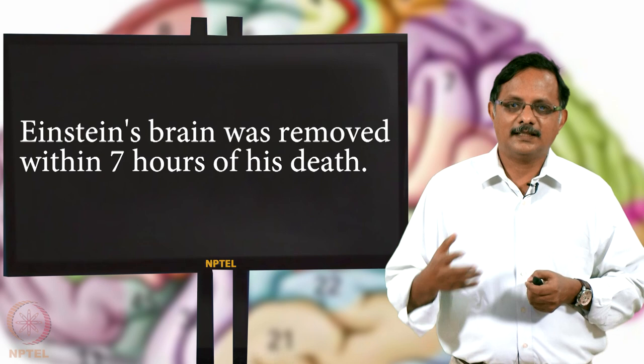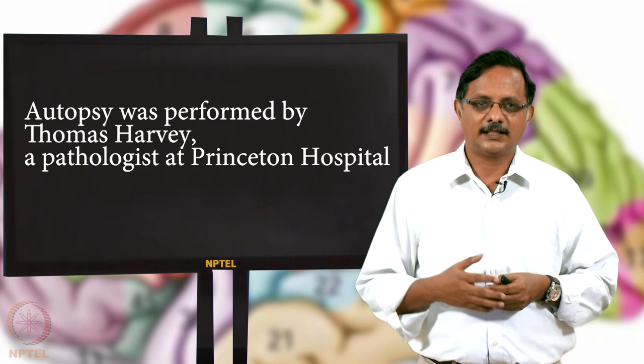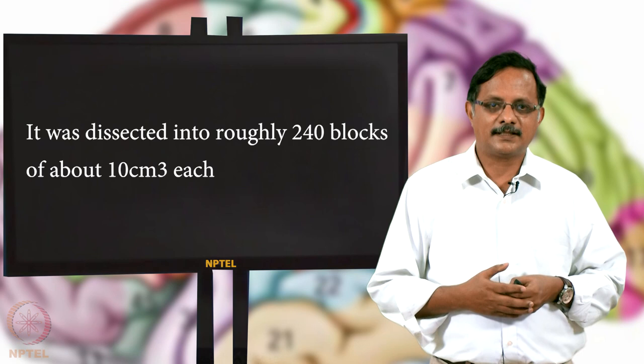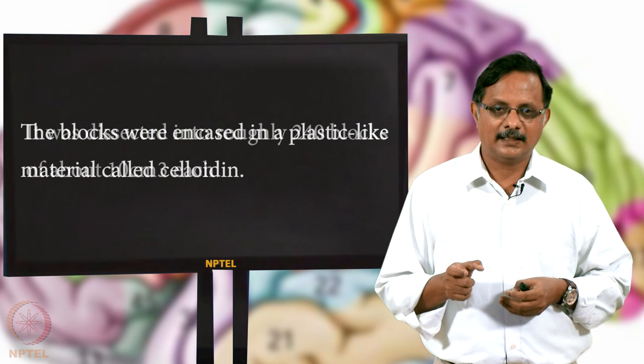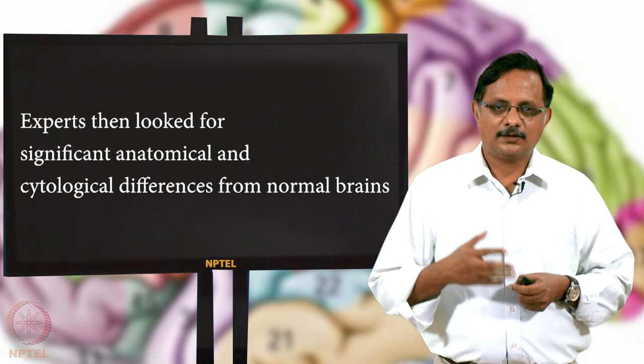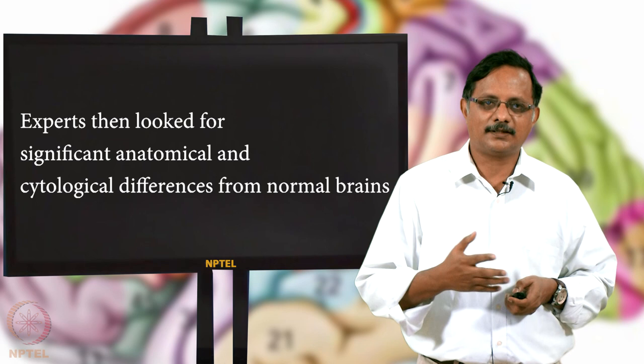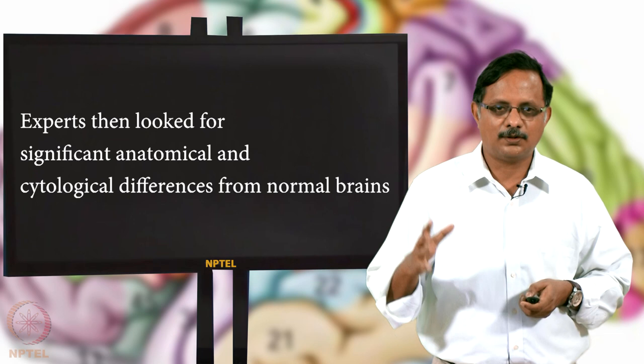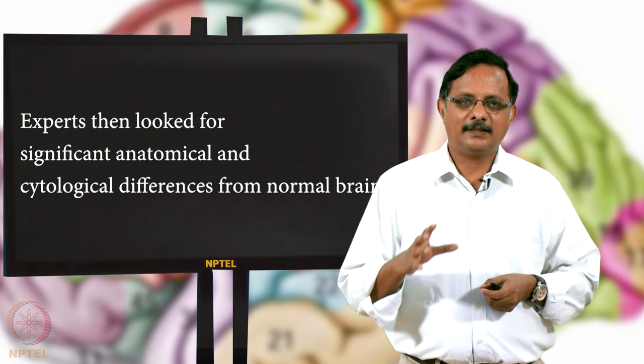After Einstein's death, his brain was removed — with permission from his son — by pathologist Thomas Harvey at Princeton Hospital. It was dissected into roughly 240 blocks of about 10 cubic centimeters each, preserved in a plastic-like material called celloidin. Many structural and anatomical studies were done on these blocks by several groups.